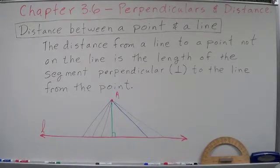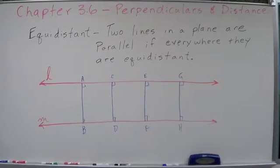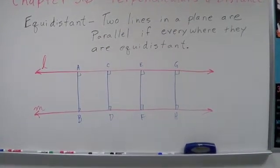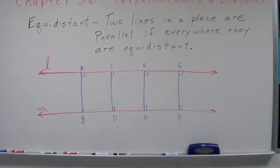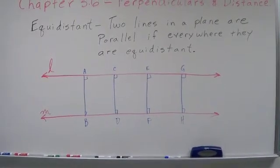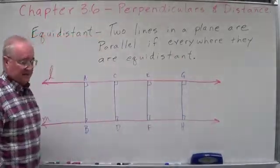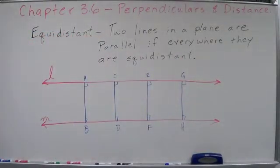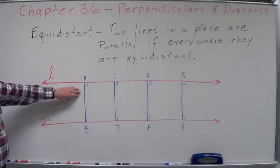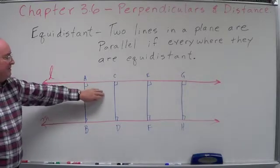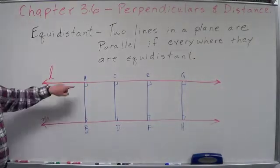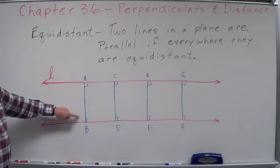So that's the concept. The shortest distance between two points is a perpendicular path to where you want to go. The next concept we need to get into is the concept of equidistant as it pertains to parallel lines. Two lines in a plane are parallel if everywhere they are equidistant — and the distance we're talking about is the perpendicular distance from one point on one line to the other line.